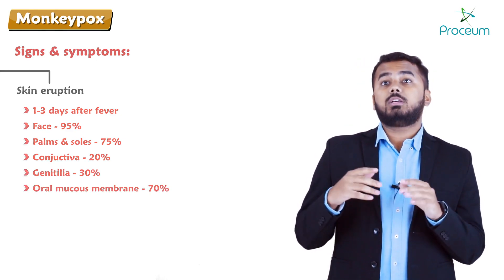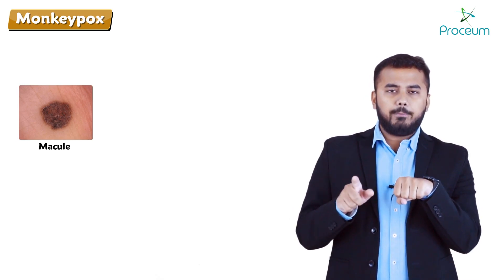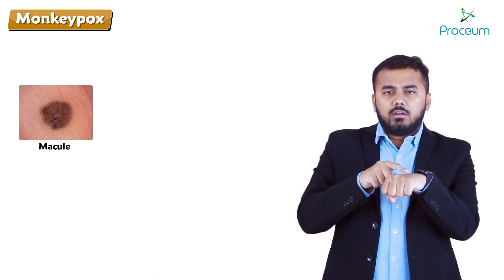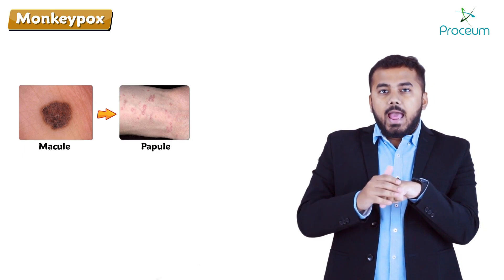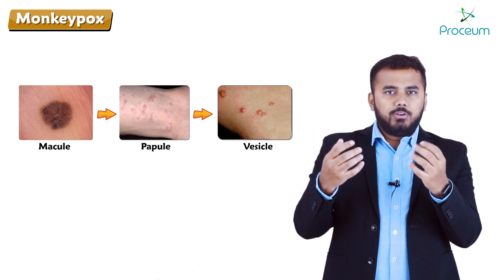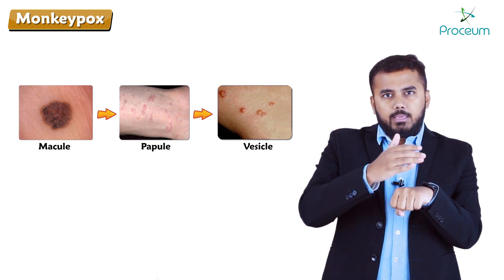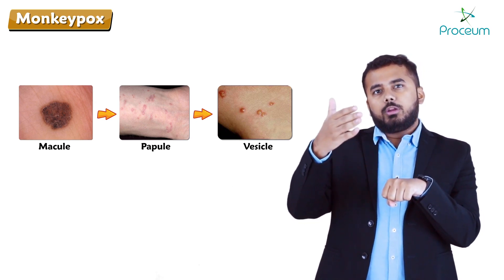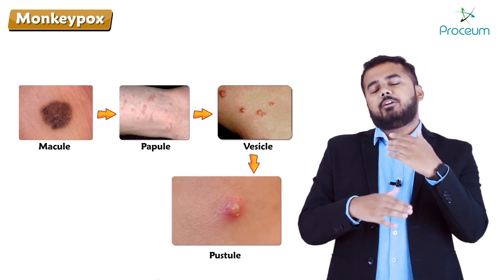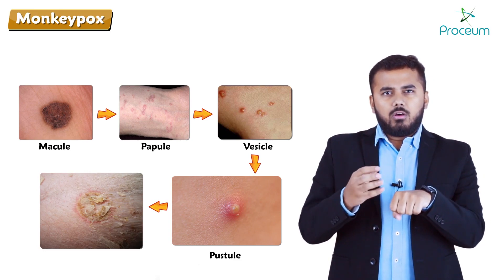The eruption begins as a macule — a flat, plain rash with no elevation. The macule progresses to a papule, then to a vesicle containing serous fluid, similar to chickenpox. The vesicle then accumulates pus and becomes a pustule. After two to three weeks, the pustule dries and falls off, forming a crust.